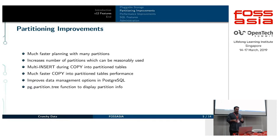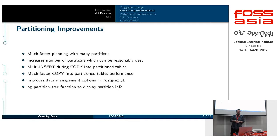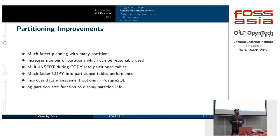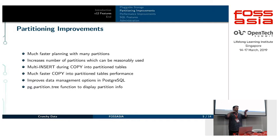There's also a new function called pg_partition_tree, which is really handy for displaying the entire partition tree. You pass in a parent partition and it gives you the whole tree down, because Postgres has multi-level partitioning — you can have multiple levels off of different columns at different levels.